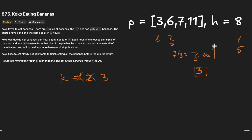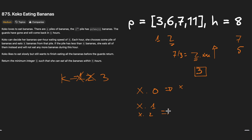Rounding up means: if the result is x-point-zero it stays x, but if it's x-point-anything — like 6.1, 2.2, or 2.8 — the result becomes x plus one. So for example if x equals two and we get 2.1 or 2.2, the rounded-up result is three. This ceiling operation is key to correctly calculating hours needed.